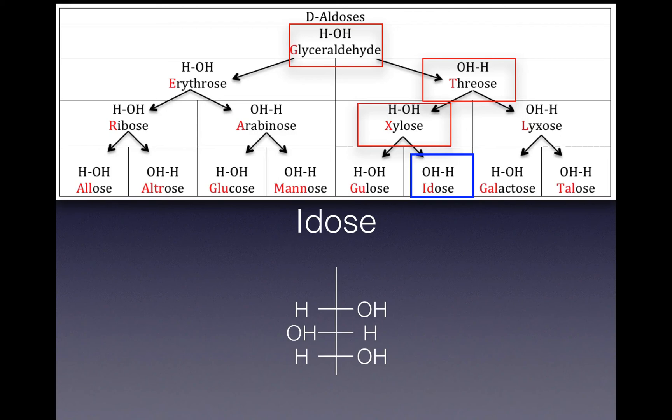Then we're aiming for our goal of idose. That's right here. We put our bar in, then add our OH on the left and our H on the right, because our arrow pointed to the right.